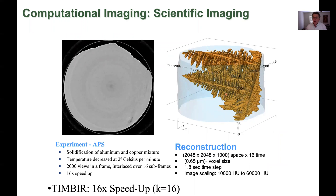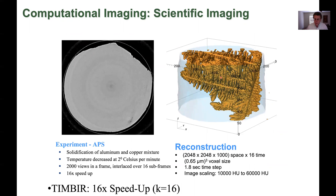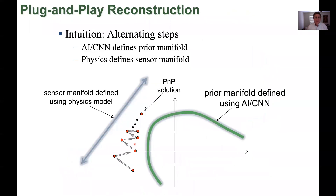We do a lot of work also in scientific imaging. This is an example where we had the first images of dendritic growth of aluminum, which is important in material science applications. This was done at the Advanced Photon Source at the Argonne National Laboratory. We were able to collect these images using special methods in which we interlace the image acquisition and use iterative reconstruction.